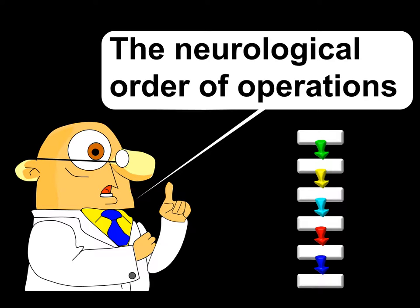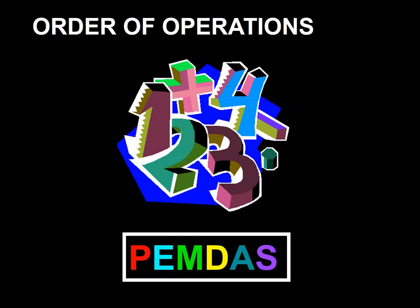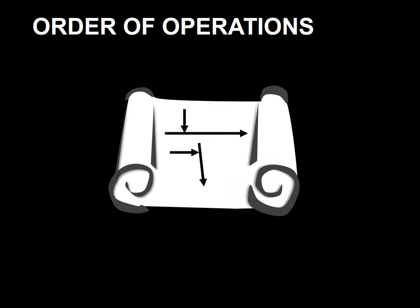I call this algorithm the Neurological Order of Operations. I call it the Neurological Order of Operations because it reminds me of the mathematical order of operations that I learned while going through high school. So, how is the Neurological Order of Operations structured?